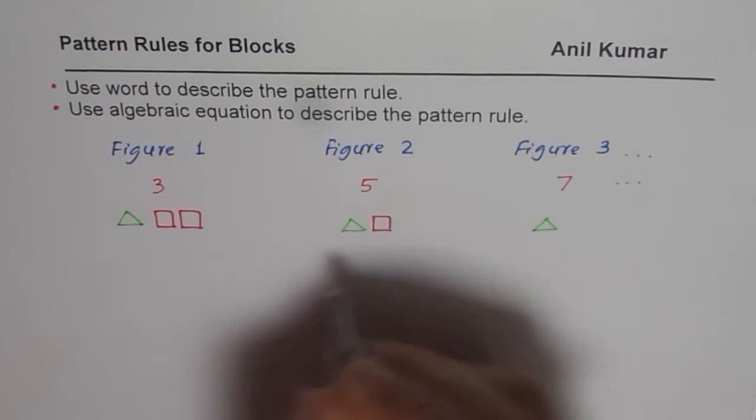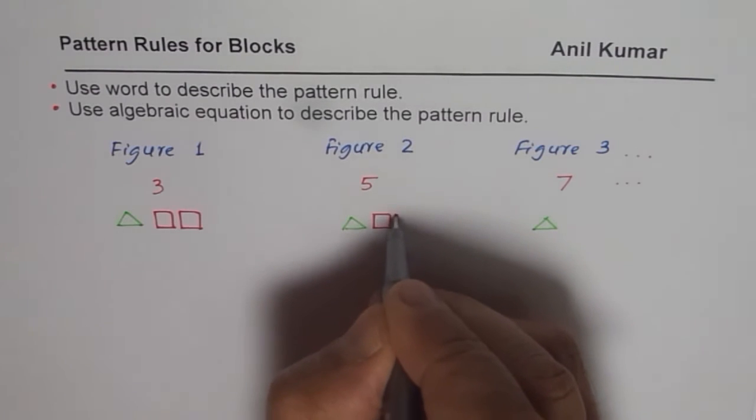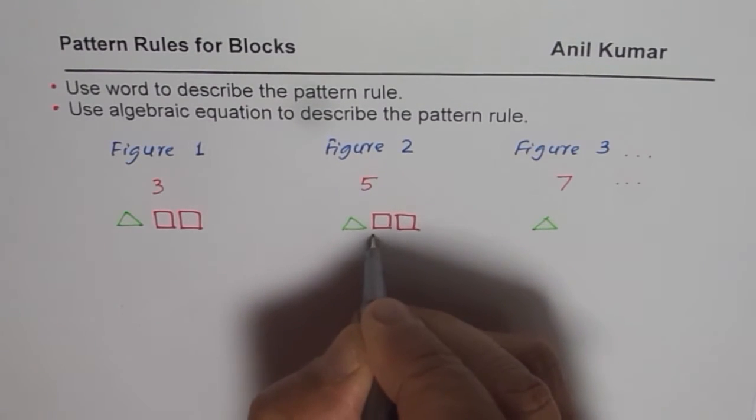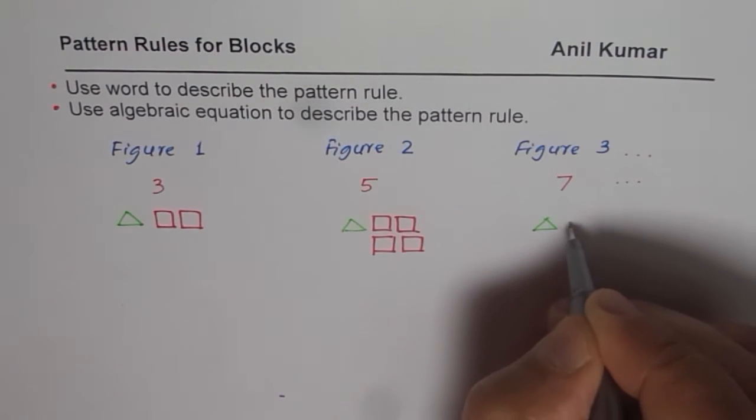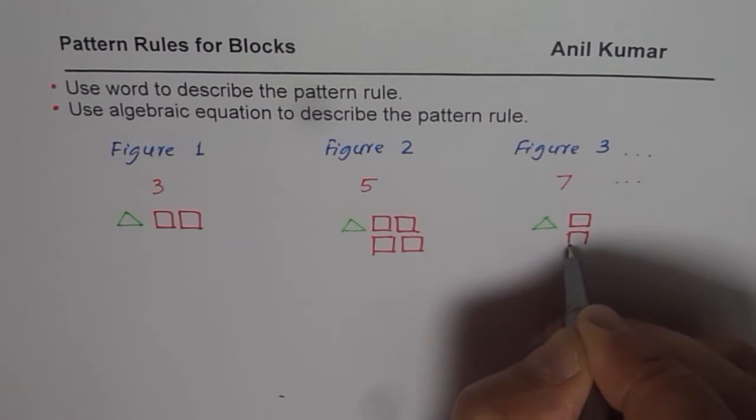So next time I need to have four here. But I keep the triangular block same. So I have four this time. And then I increase by two more. So I have six in the figure number three.